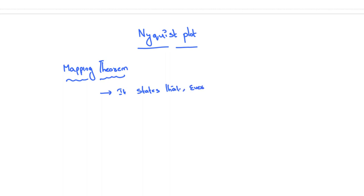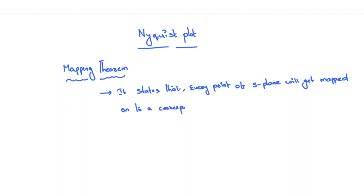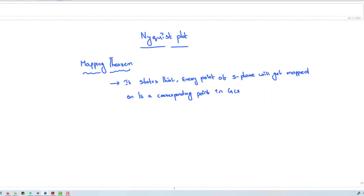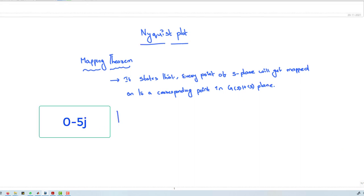For example, if you draw some point on the S-plane, there will be a corresponding point on the G(s)H(s) plane. The combination of all points in the S-plane is called the Nyquist contour, and the plot of this Nyquist contour onto the G(s)H(s) plane is called the Nyquist plot. Let us take the example of the point 0 minus 5j.